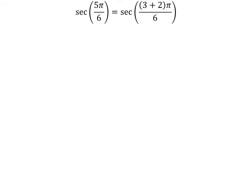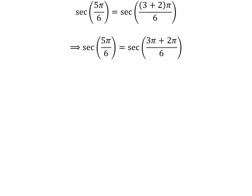Here is the second method to find the value of secant of 5 times pi upon 6. We know 3 plus 2 is equal to 5. So secant of 5 times pi upon 6 is equal to secant of 3 plus 2 times pi upon 6. Expanding the numerator, we get secant of 5 times pi upon 6 is equal to secant of 3 times pi plus 2 times pi upon 6.